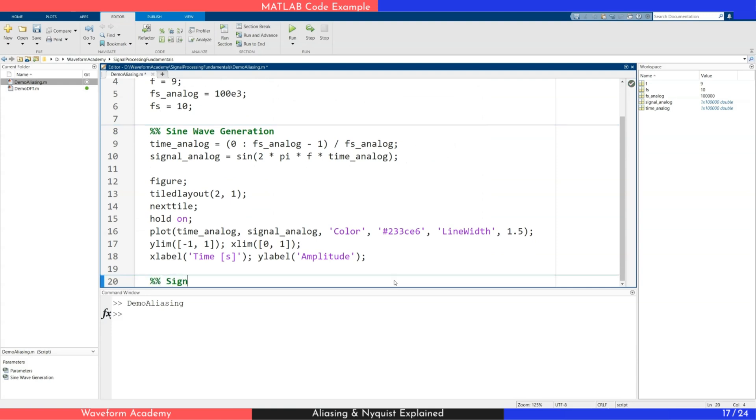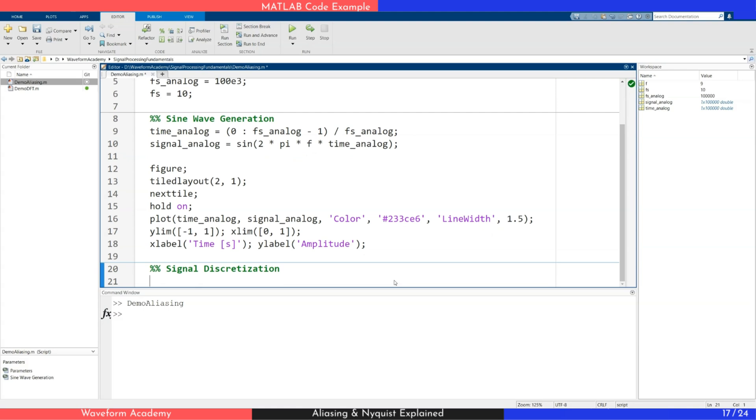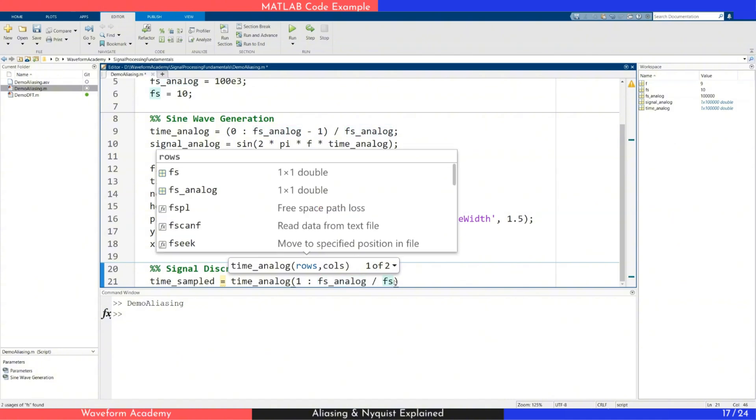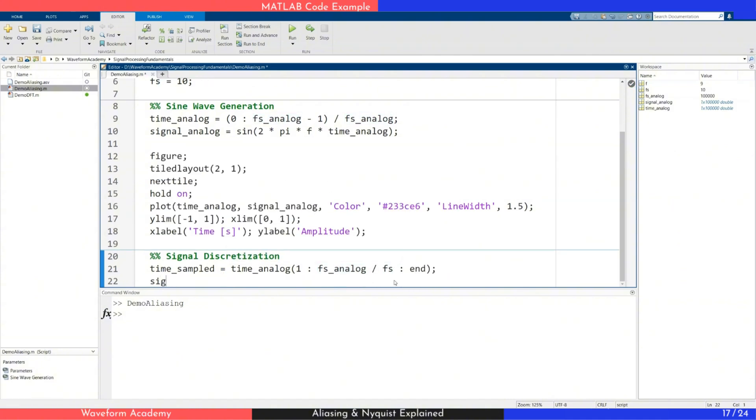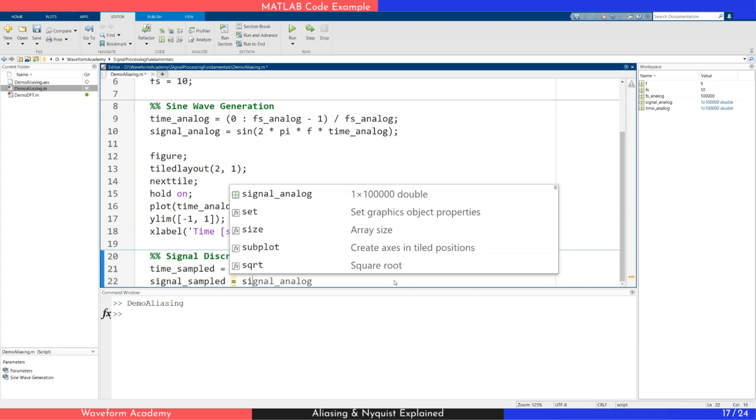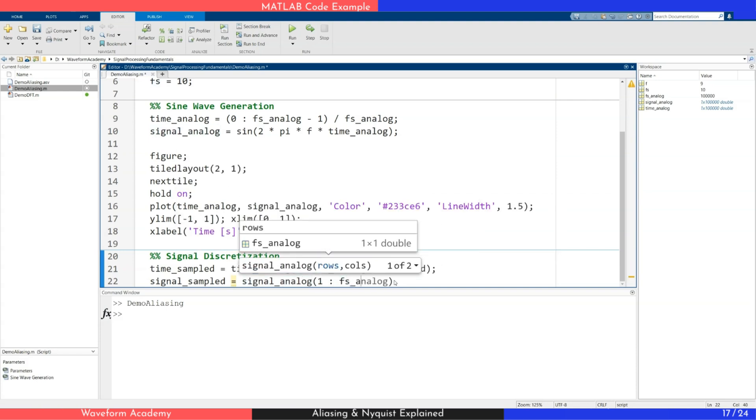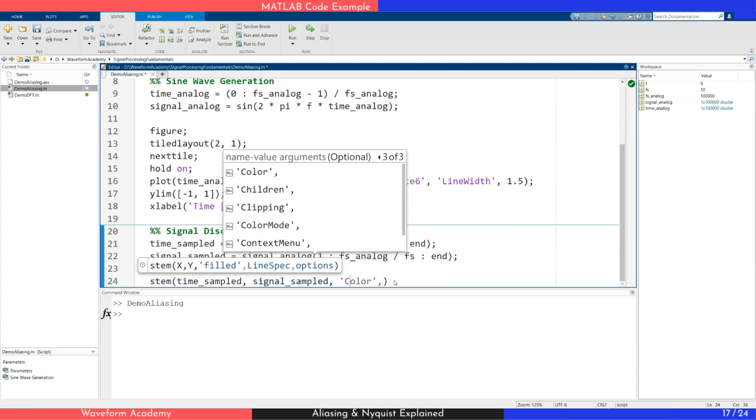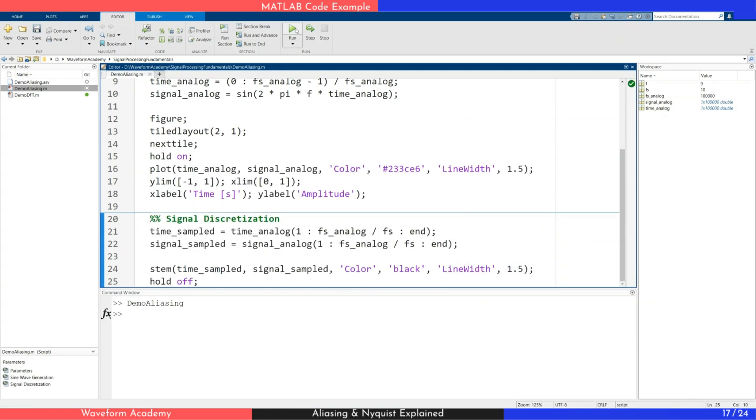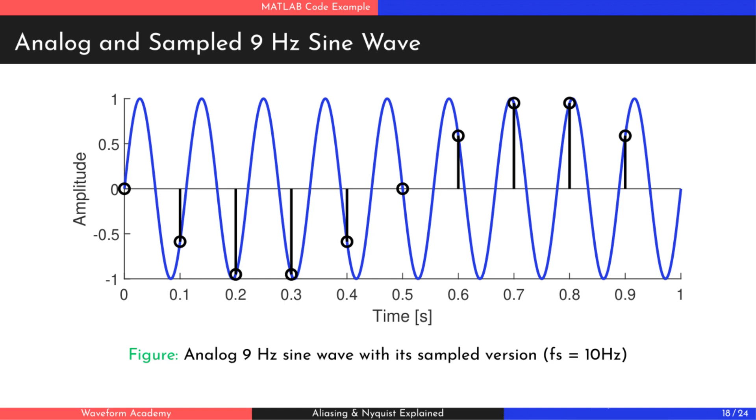Now, let's take discrete samples from the continuous signal. We create a time vector by selecting every few points to match the 10 Hz sampling rate. Then, we compute the corresponding values and add them to the plot. As you can see, 10 points now appear on the graph representing the digitized version of the signal.